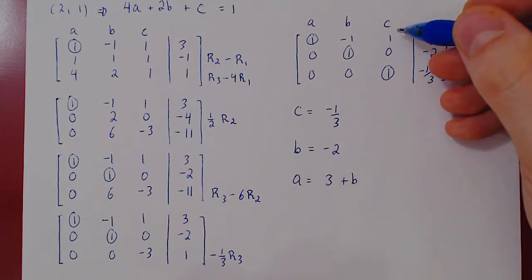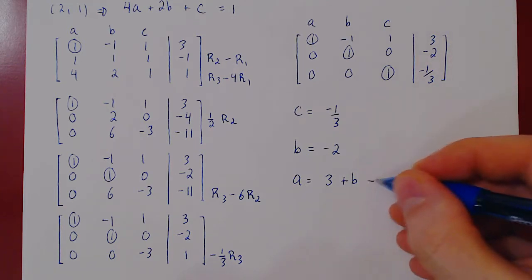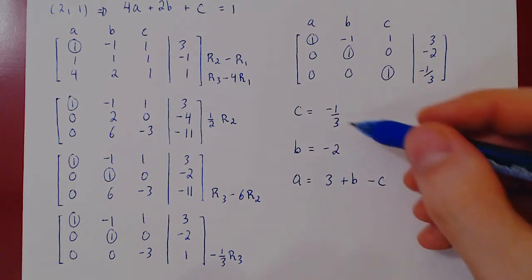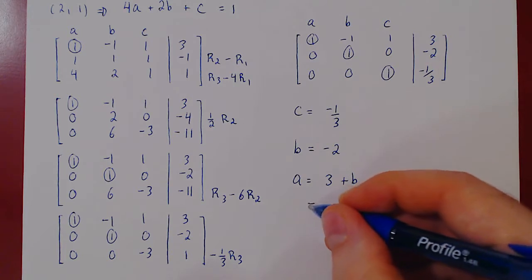There's a positive c on the left, send it on the right and we get negative c. But we know what b and c are. B is negative two. Minus c, as c is negative one third, this is a positive one third. Three minus two is one, one plus one third is four thirds.